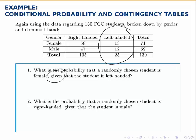So we zoom in on that column and that's all we have to worry about. The probability that the student is female given that the student is left-handed tells us that we're working with a pool of 25 students — all the left-handed students — and we're asking what proportion of those are female. Well, there are 13 students that are female and left-handed, and there are 25 left-handed students total. So the probability is 13 out of 25.